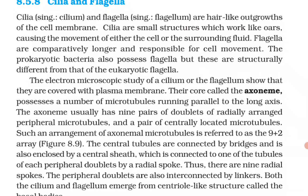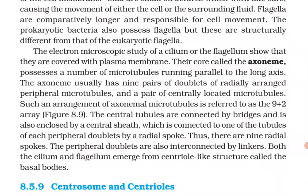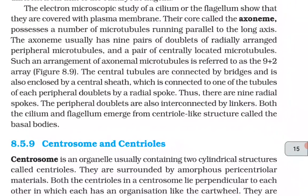Prokaryotic bacteria also possess flagella but these are structurally different from eukaryotic flagella. The electron microscopic study of a cilium or flagellum shows they are covered with the plasma membrane. Their core, called the axoneme, possesses a number of microtubules running parallel to the long axis. The axoneme usually has nine pairs of doublets of radially arranged peripheral microtubules and a pair of centrally located microtubules — an arrangement referred to as the 9+2 array. The central tubules are connected by bridges and enclosed by a central sheath, connected to one tubule of each peripheral doublet by radial spokes. There are nine radial spokes, and the peripheral doublets are also interconnected by linkers.